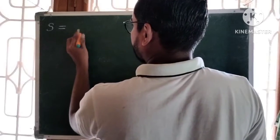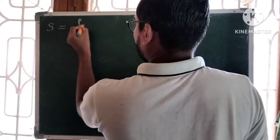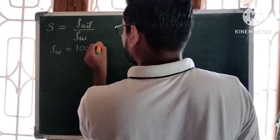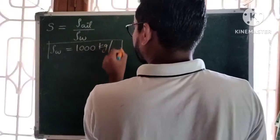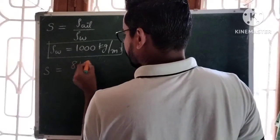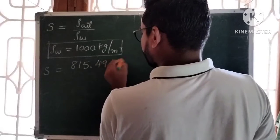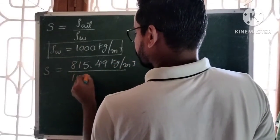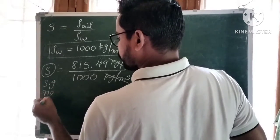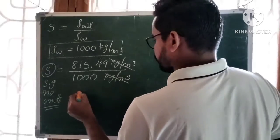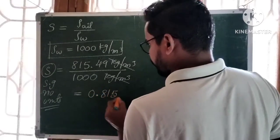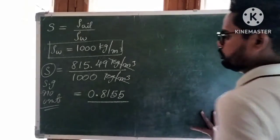Specific gravity S equals density of oil divided by density of water. Density of water is 1000 kg per meter cube. So S = 815.49 divided by 1000. Since both units are kg per meter cube, they cancel — specific gravity has no units. We get S approximately equal to 0.815.